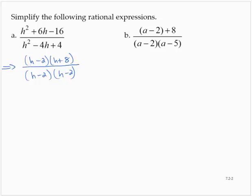We are allowed to remove any common factor between the numerator and denominator, and so we would be left with h plus 8 over h minus 2.